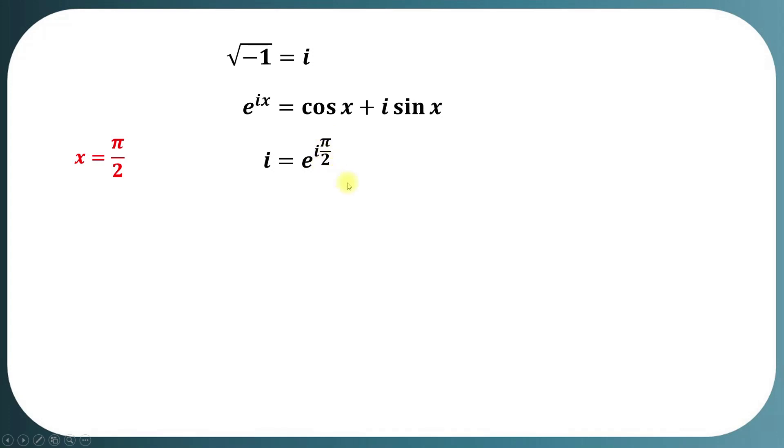This implies natural log of iota equals iota times pi by 2, by using properties of log.